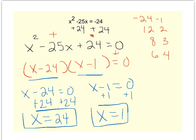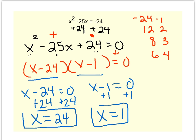So if I were going to graph this, I would know that my problem, my u-shape, would cross the x-axis way out at 24 and at 1.